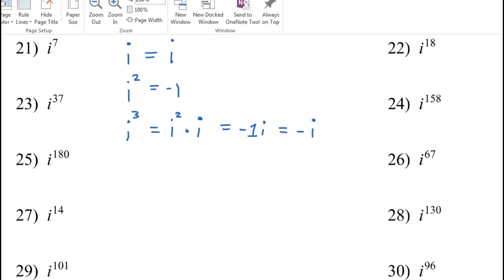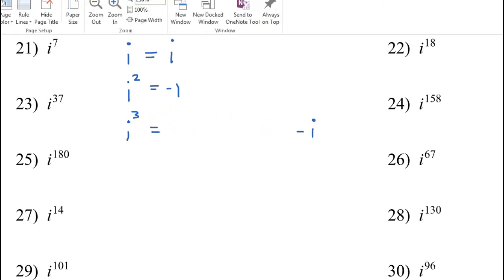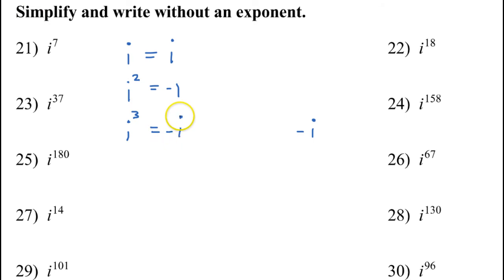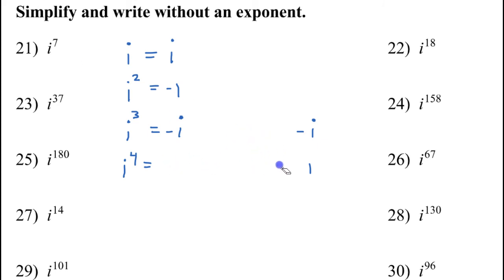This is useful enough that I want you to go ahead and memorize it: i to the third power is negative i. Now, how about i to the fourth power? i to the fourth power can be derived from i squared, because i to the fourth power is i squared times i squared. That would be negative 1 times negative 1, which equals positive 1. I want you to memorize that i to the fourth power is equal to 1.